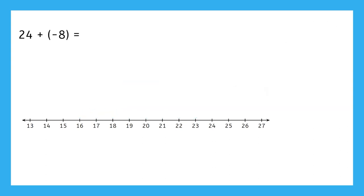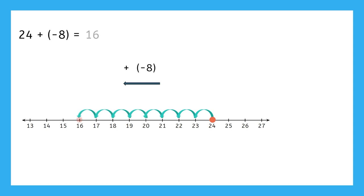But what would happen if we added negative 8? We could think of the negative sign as telling us to do the opposite. So the plus in our equation tells us to go right, but the negative tells us to do the opposite, which in this case is to go left. So start at 24 and move to the left eight spaces, which brings us to 16. So 24 plus negative 8 equals 16.